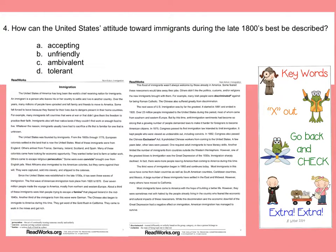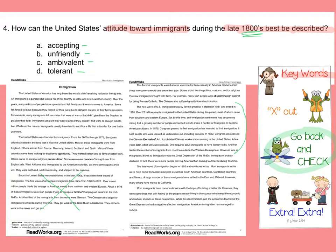This next question asks: how can the United States' attitude towards immigrants during the late 1800s best be described? Keywords: attitude towards immigrants and late 1800s. We go back into the text and we're looking at what's going on in the late 1800s. Our choices are: accepting, unfriendly, ambivalent, and tolerant. We don't have these words explicitly in the text, so we're going to have to do some figuring out using what we know.